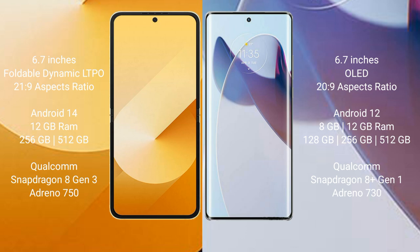Samsung Galaxy Z Flip 6 runs on Android 14, while Motorola X30 Pro runs on Android 12. The Z Flip 6 comes with 12GB RAM, 256GB or 512GB internal storage, Qualcomm Snapdragon processor, and GPU Adreno 750. Motorola X30 Pro comes with 8GB or 12GB RAM, 128GB, 256GB, or 512GB internal storage, Qualcomm Snapdragon 8 Gen 1 processor, and GPU Adreno 730.